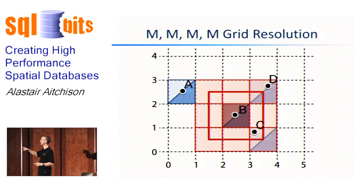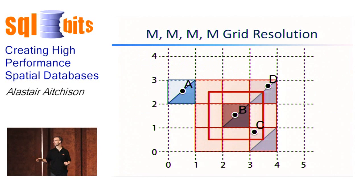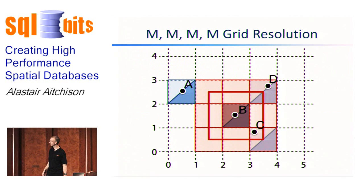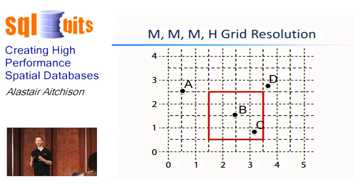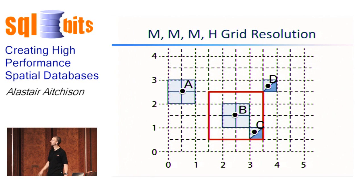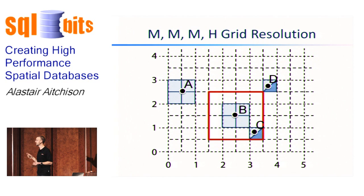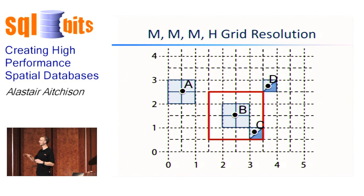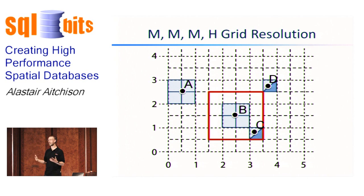Here are the results from our earlier query that had medium at all four levels of the grid — our four points and the polygon. If we change level four to be a high grid resolution, every level four cell would become half as wide and half as high. When we do the tessellation on this new grid, points C and D on the right-hand side now partially intersect a smaller cell. But points A and B now lie on the border of four cells each, and because being on the border counts as intersecting a cell, every one of those four cells must be stored in the index.